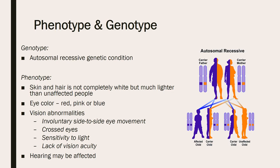They also experience vision abnormalities, and it differs based on the type of albinism that the person has. Some can use glasses to fix the eye problems; others need surgery. These abnormalities include involuntary side-to-side eye movement, being cross-eyed, extreme sensitivity to light, and less sharp vision, but not completely blind.